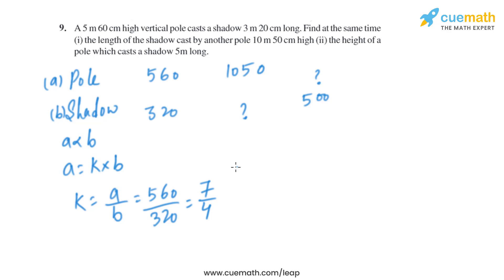On solving this, we'll get the value of k, that is 7 by 4. Now in this one, a is given, we have to find b. So 1050 equals 7 by 4 multiplied by b. From here we'll get 1050 multiplied by 4, which is 4200 divided by 7, which is 600 centimeter.